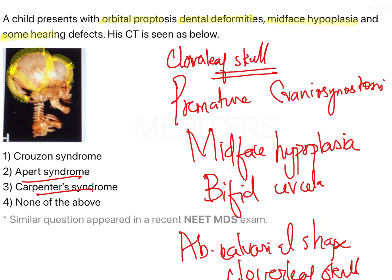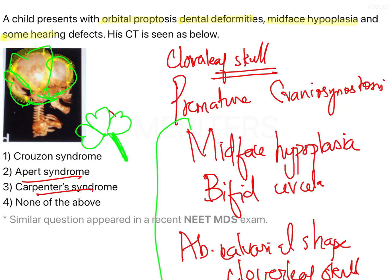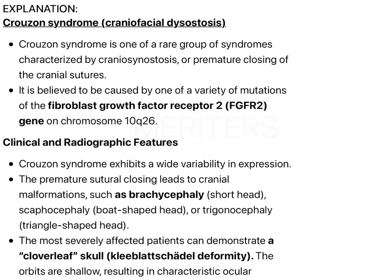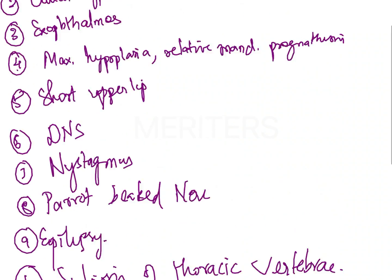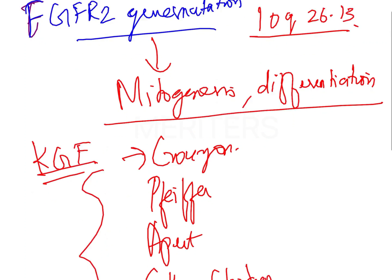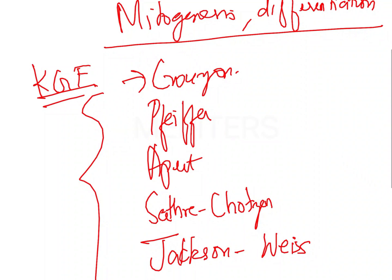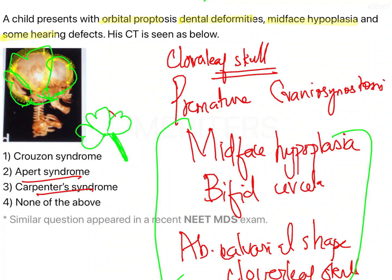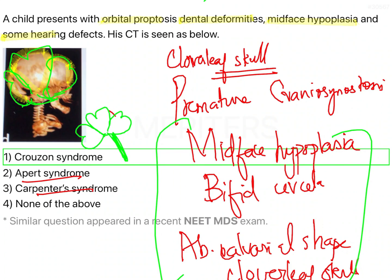In CT, if you have a cloverleaf skull — which resembles a cloverleaf shape — that points to Crouzon syndrome. We have reviewed the clinical spectrum, various clinical features, genetic mutation, other syndromes affected by the same FGFR2 gene mutation, and how to differentiate from other options. The answer for this question is Crouzon syndrome.